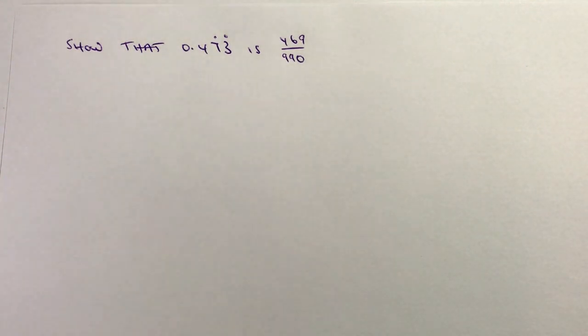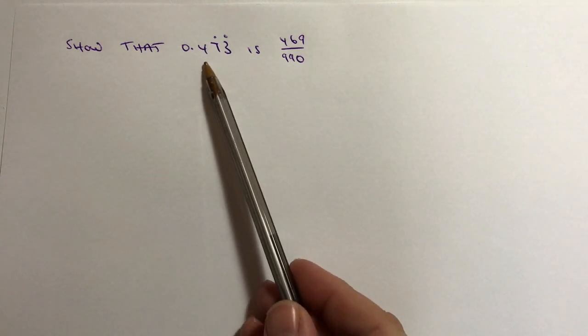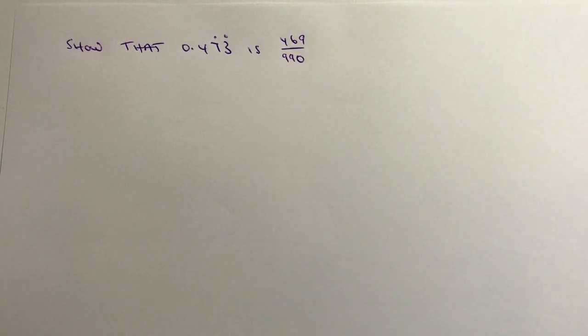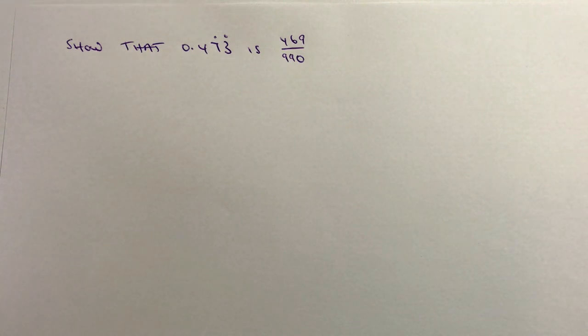Hi, in this video we're going to look at this whole idea of changing a recurring decimal — in this case 0.473 recurring — to the fraction 469 over 990. There is a technique for doing this and I'm going to go through it in this particular playlist, so if you want to also have a look at some of the other videos, you'd use exactly the same principles each time.